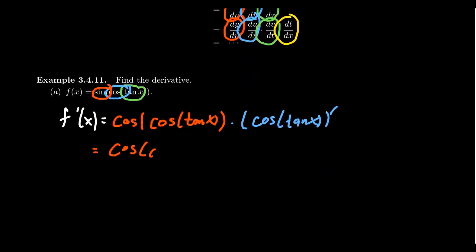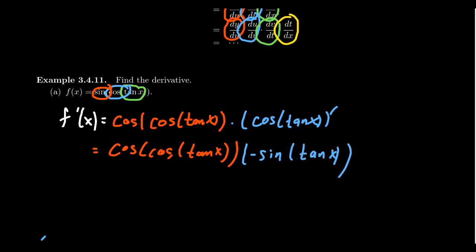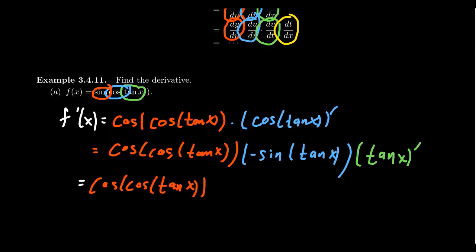Let me copy down cosine of cosine of tangent again. We have to take the derivative of cosine here. The derivative of cosine is negative sine of its inner function, which is tangent of x. But then we multiply by the inner derivative of that function — we take the derivative of tangent. Putting this all together, we have cosine of cosine of tangent, then negative sine of tangent, and then the derivative of tangent, which is secant squared of x.